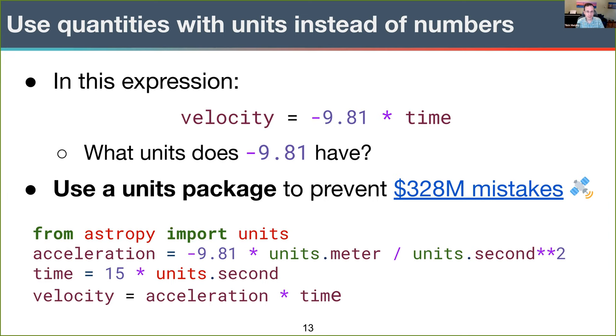So using a units package can prevent potentially 328 megadollar mistakes. This mistake refers to the Mars Climate Orbiter, which crashed into Mars on my birthday in 1999 because of a mismatch between SI and Imperial units in the flight software. An example of a units package in the astronomical Python community is astropy.units. So with astropy.units, we take a number like minus 9.81 and multiply it by meters per second squared to get a quantity with units of acceleration. And when we multiply acceleration times time, unit operations are handled automatically. And if we try an invalid operation, like adding a length to a time, we'll get an error. So it's like an additional really helpful check. Astropy.units is probably my favorite part of the scientific Python-verse.